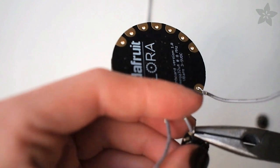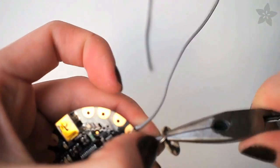The pixels will chain together and are individually addressable meaning you can tell each one to be a different color if you like.